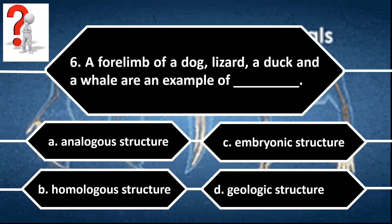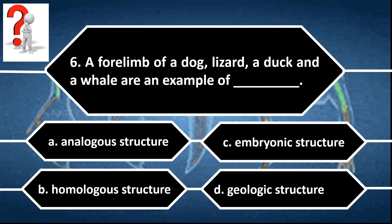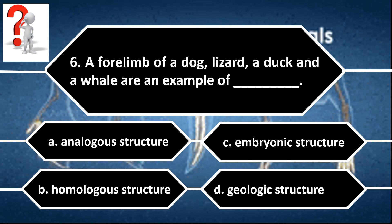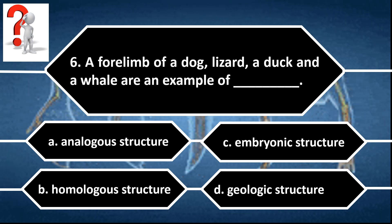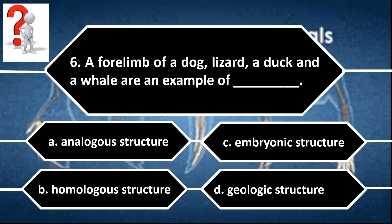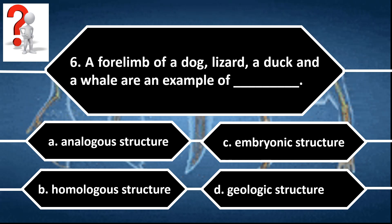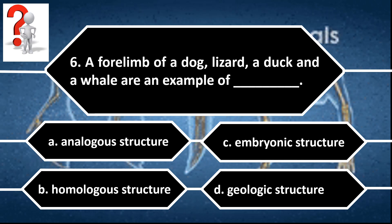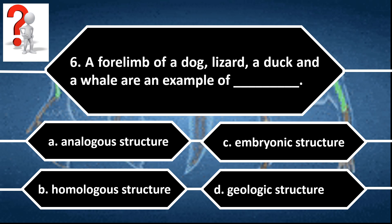Number 6. A forelimb of a dog, lizard, duck and a whale are an example of blank. A. Analogous structure. B. Homologous structure. C. Embryonic structure. D. Geologic structure.